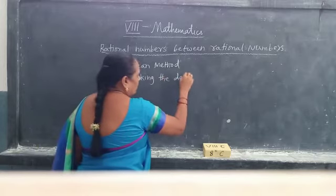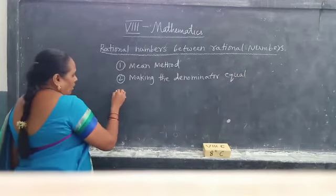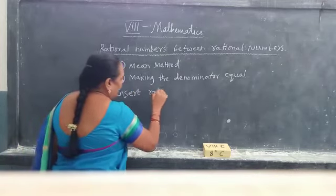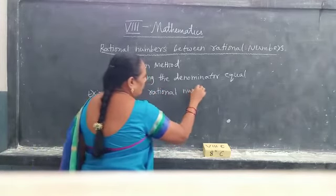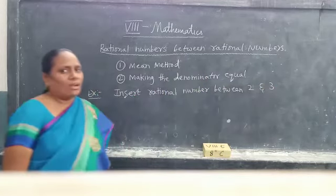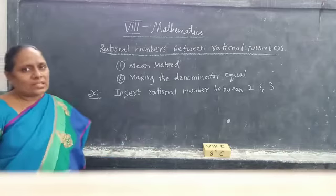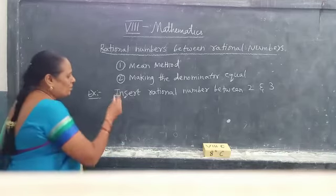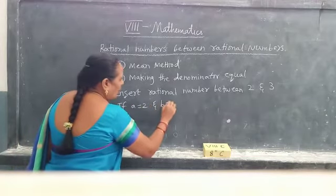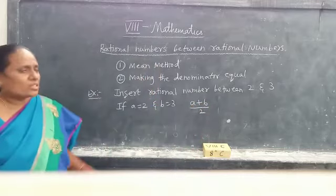The first method is the mean method, and the second one is making the denominator equal. So first we will see the mean method. Example: insert a rational number between 2 and 3. These are rational numbers — by writing 1 as the denominator they are rational numbers. How do you insert a rational number between 2 and 3 by mean method? If A equals 2 and B equals 3, the rational number between them is found by A plus B by 2. This is called the mean method — sum of the observations divided by number of observations.